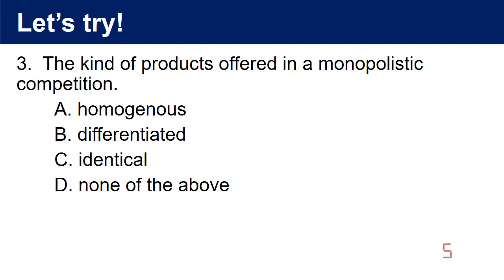3. The kind of products offered in a monopolistic competition. A. Homogenous. B. Differentiated. C. Identical. D. None of the above. The answer is B. Differentiated.